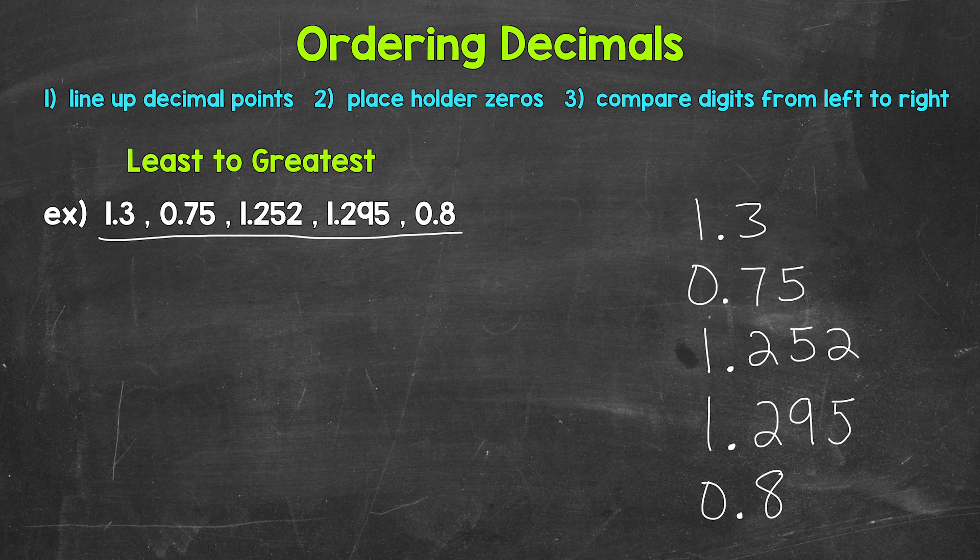We need to find the decimal that goes to the furthest place to the right. That's going to be the thousandths place. So let's use placeholder zeros to the right of the other decimals to make them go to the thousandths place as well.